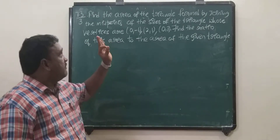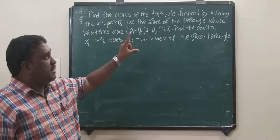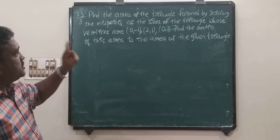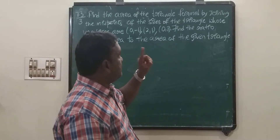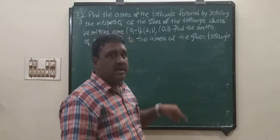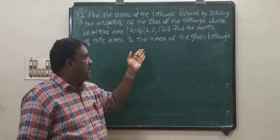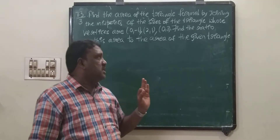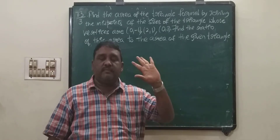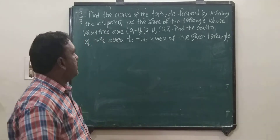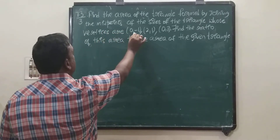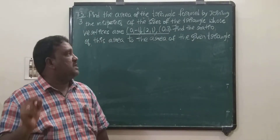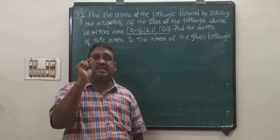Find the area of the triangle. Read the problem a number of times. Find the area of the triangle formed by joining the midpoints of the sides of the triangle whose vertices are (0, -1), (2, 1), and (0, 3). Find the ratio of this area to the area of the given triangle.